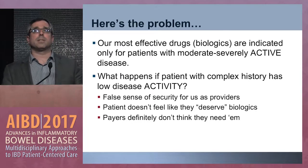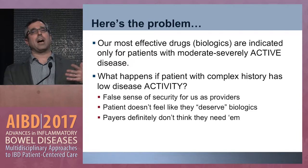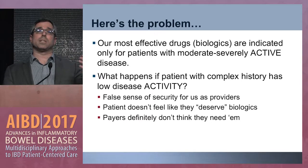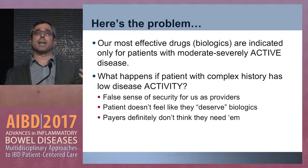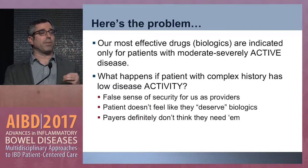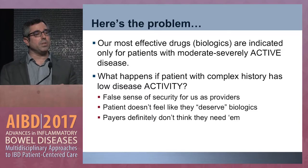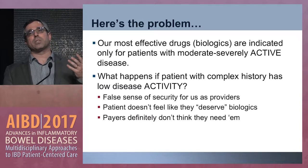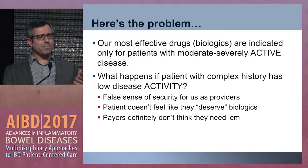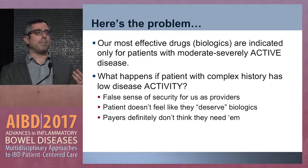The problem is our most effective drugs — the biologics — are indicated only for patients with moderate to severely active disease. When a patient comes in with a complex history but low disease activity, we have a false sense of security. You might be compelled to leave them on 5-ASAs, not recognizing that their disease severity could be much more complex. And patients, when they feel okay, don't feel like they deserve biologics — they don't feel sick enough. Payers don't think our patients need them unless they're sick enough either.